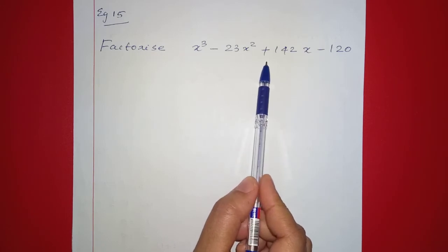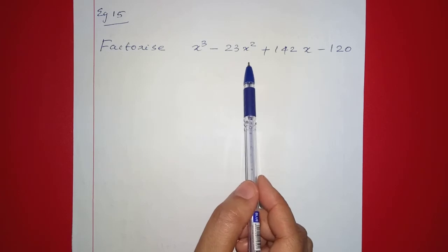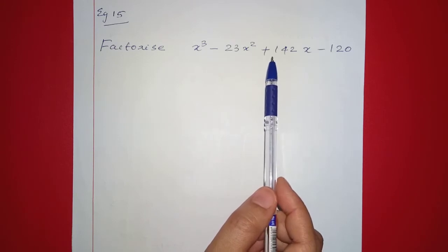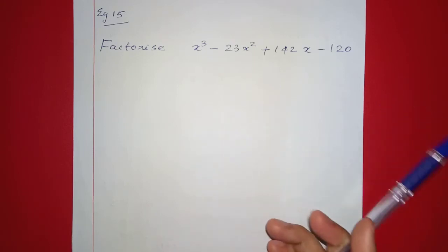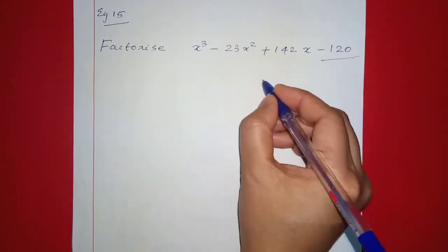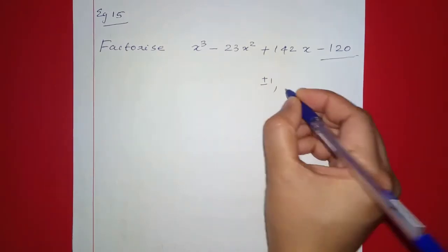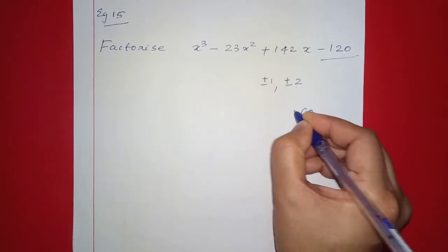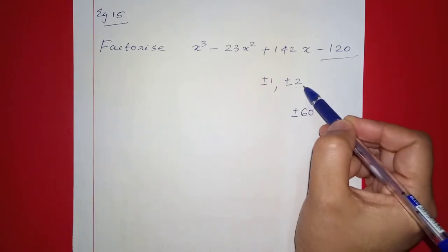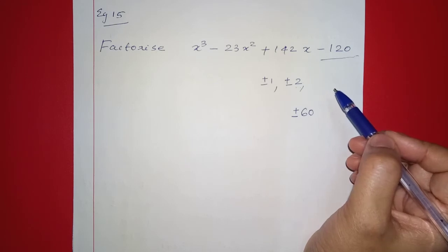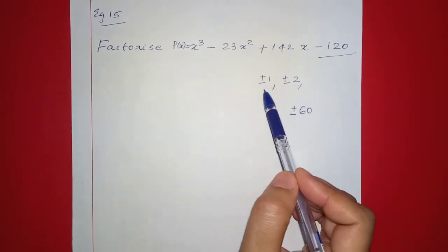We will now factor a cubic polynomial. Example: factor x cubed minus 23x squared plus 142x minus 120. We use the trial method. The constant term is negative 120, so the possible factors are plus or minus 1, plus or minus 2, plus or minus 3, plus or minus 4, plus or minus 5, plus or minus 6, plus or minus 60, and so on.